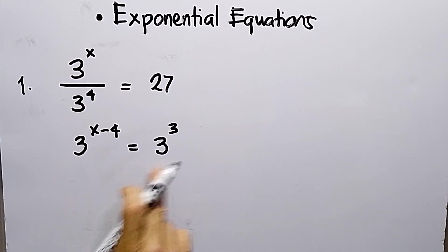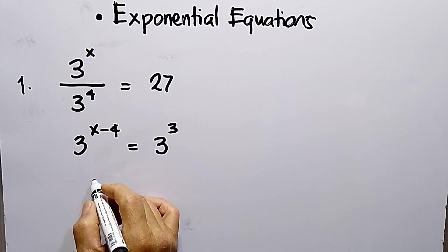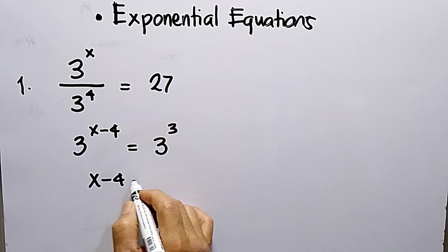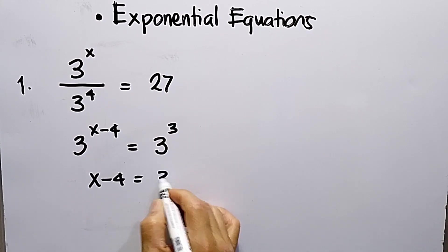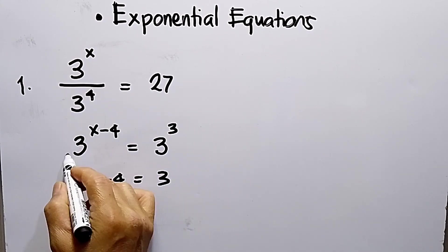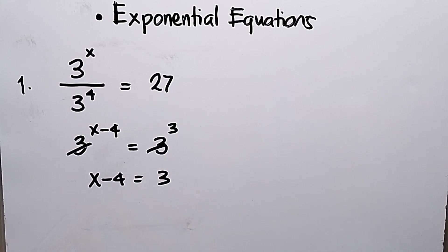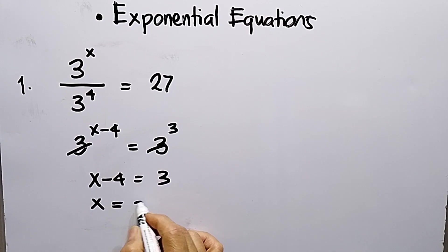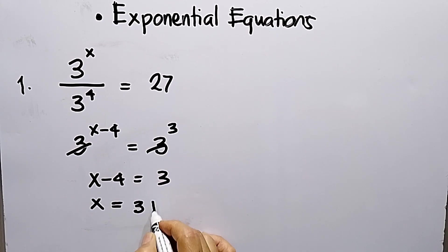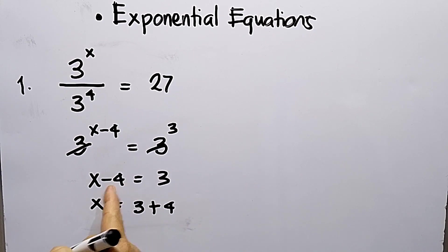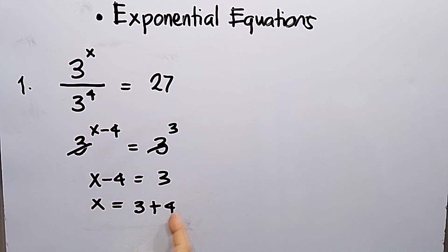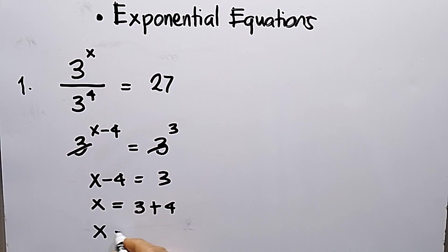According to the laws of exponents, this gives us x minus 4 equals 3. Solving for x: x equals 3 plus 4, because I transpose the negative 4 to the right side where it becomes positive 4. So x equals 7.